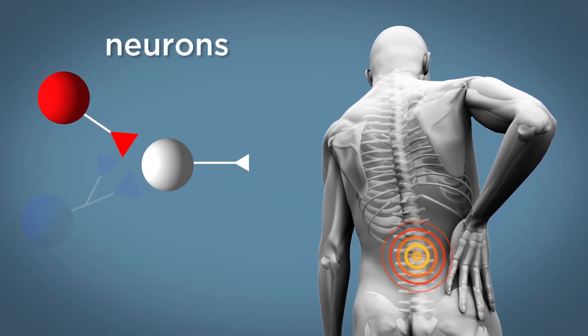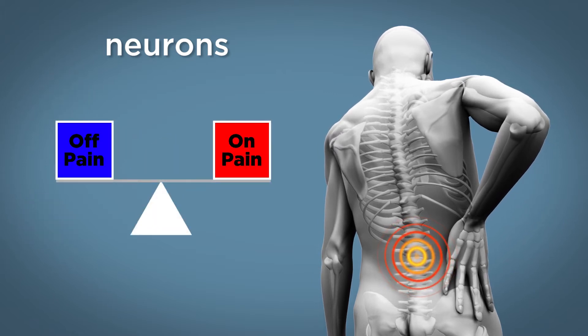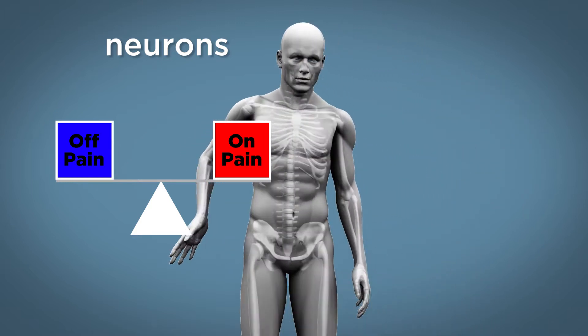Your brain also has neurons that turn off pain. Normally, there is an even balance between the activity of the neurons that turn on pain and those that turn off pain, so you do not feel pain.